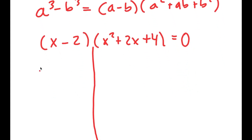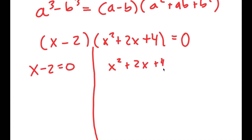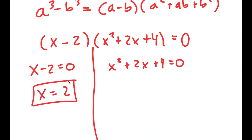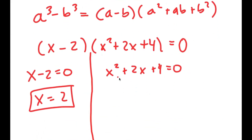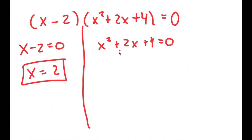So now I get two equations: x minus 2 equals 0, and x squared plus 2x plus 4 equals 0. For x minus 2 equals 0, I get x equals 2, which was a solution we already got. But on top of this, we have another equation with two more solutions because it's a quadratic equation. So to solve this, I'm going to use the quadratic formula.